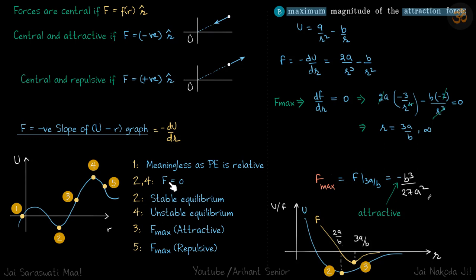If force is zero, the position is in equilibrium. At point two, the double differentiation is positive, which means it's a stable equilibrium. As you increase R, the slope becomes positive, so the force is negative, pulling back.